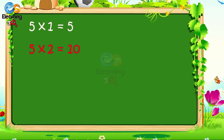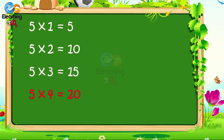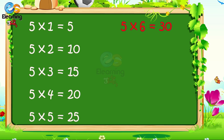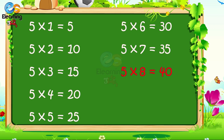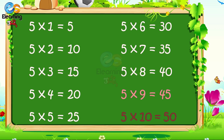5 1s are 5. 5 2s are 10. 5 3s are 15. 5 4s are 20. 5 5s are 25. 5 6s are 30. 5 7s are 35. 5 8s are 40. 5 9s are 45. 5 10s are 50.